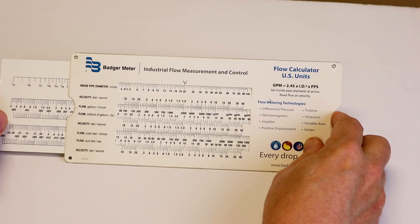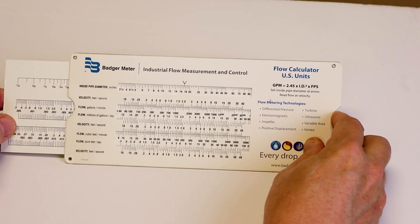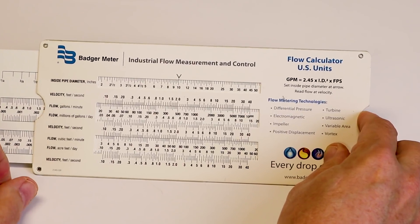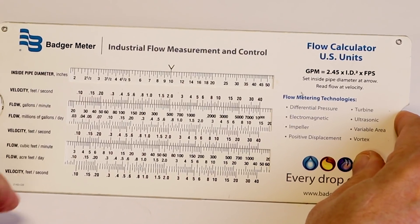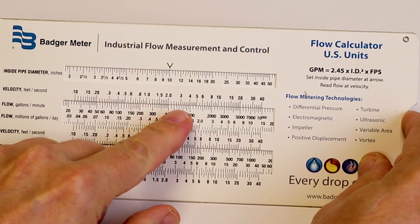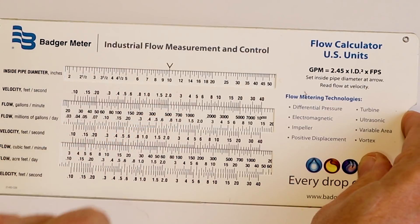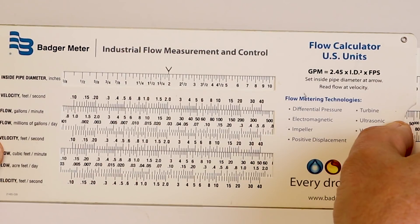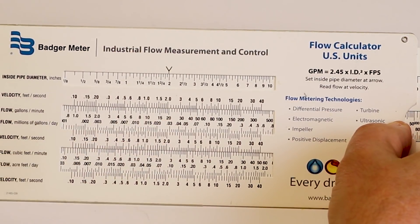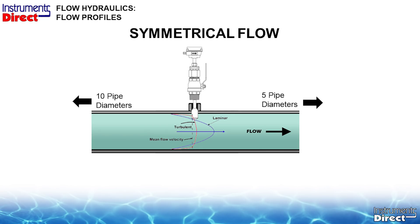The velocity changes with pipe size. For example, a 10-inch pipe at 2 feet per second equals about 500 gallons per minute, while a 2-inch pipe at 2 feet per second equals 20 gallons per minute.